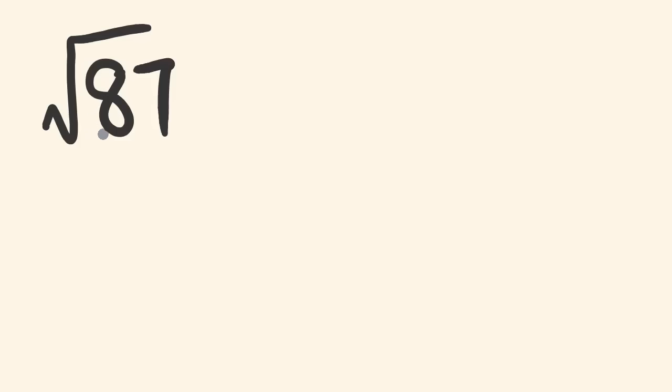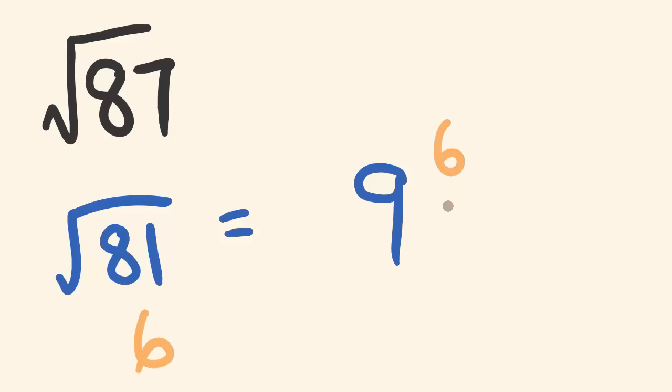Okay, so the square root of 87. The first thing we do to work these out is we look for the closest perfect square below 87. Well, the closest perfect square root before 87, so we're looking at the square root of 81 is equal to 9. So the difference between 87 and 81 is 6. So we're going to put this as a 6.